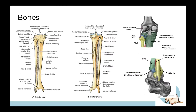The interosseous membrane also separates different muscular compartments of the leg. In the thigh we had anterior, posterior, and medial compartments, while in the leg we have anterior, posterior, and lateral compartments — slightly different there.